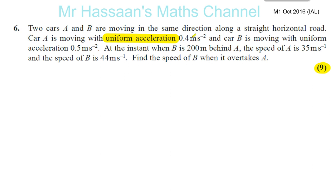Uniform acceleration of 0.4 meters per second squared — that's for A. Car B moves with uniform acceleration as well, 0.5 meters per second squared. At the instant when B is 200 meters behind A, the speed of A is 35 meters per second and the speed of B is 44 meters per second. Find the speed of B when it overtakes A.